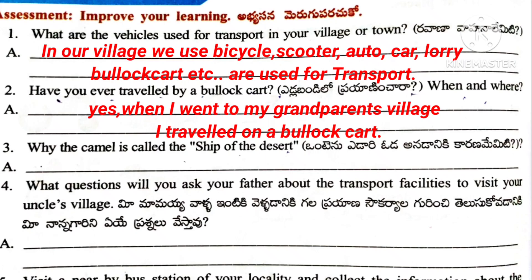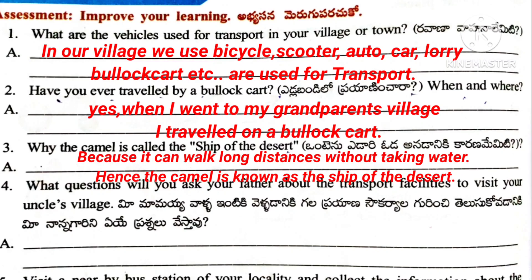Question number 3: Why is the camel called the ship of the desert? Answer: Because it can walk long distances without taking water. Hence the camel is known as the ship of the desert.